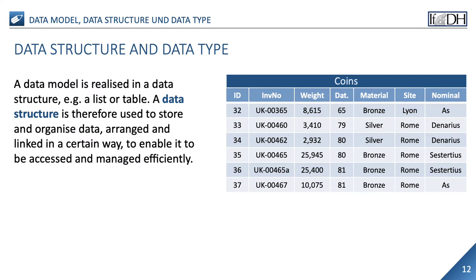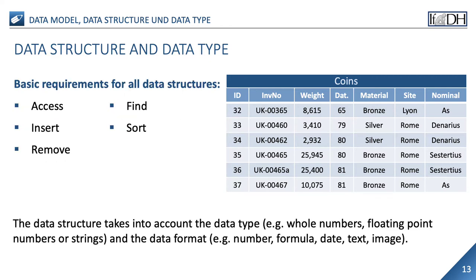A data model is realized in a data structure, for example a list or a table. A data structure is used to store and organize data, arranged and linked in a certain way, to enable efficient access and management. The basic requirement for all data structures is that they can map the accessing, finding, inserting, sorting and removing of data. The data structure takes into account the data type — for example integers, floating point numbers or strings — and the data format, such as number, formula, date, text or image.